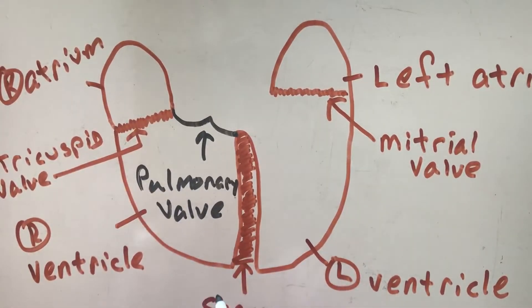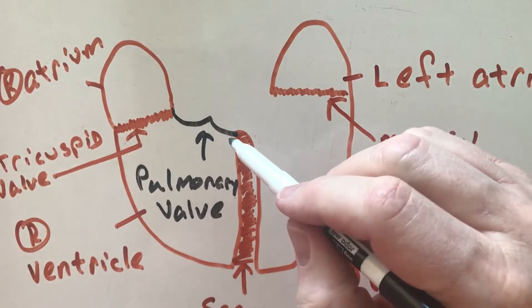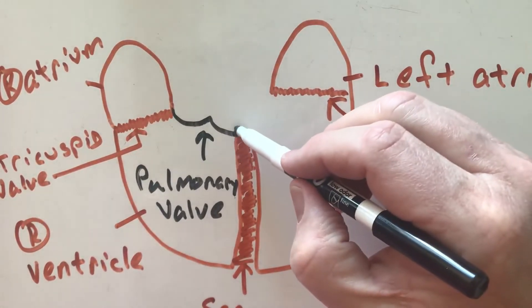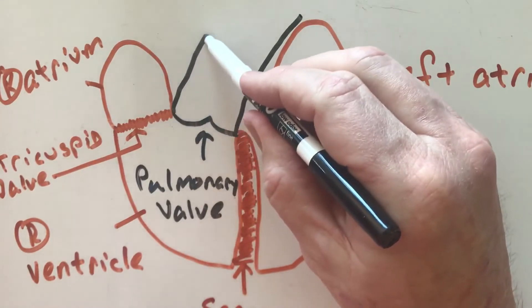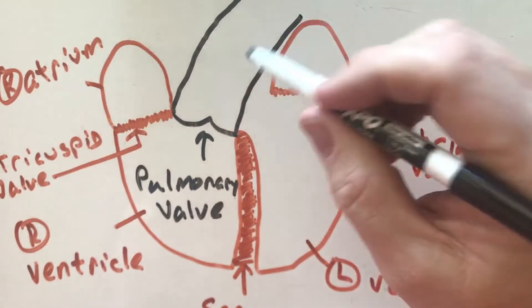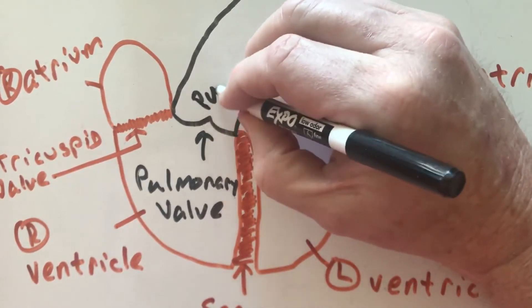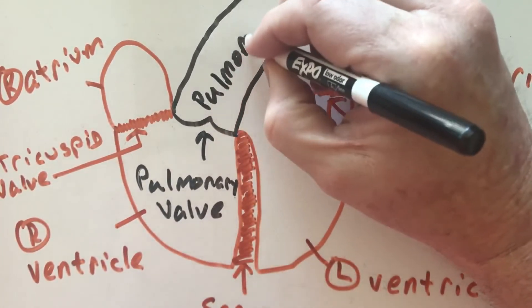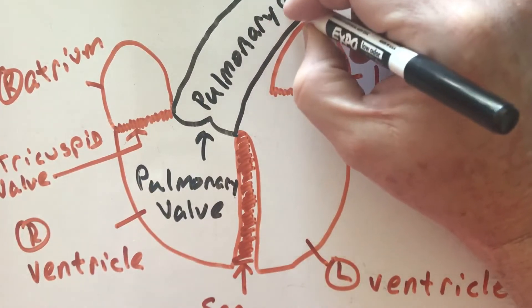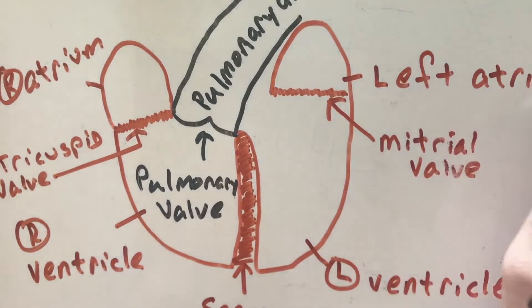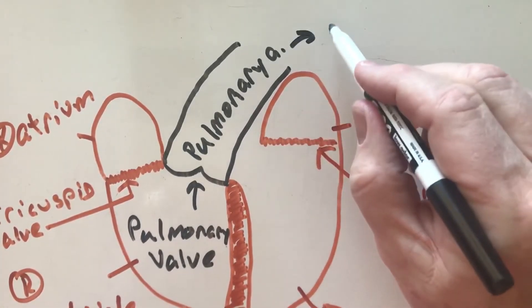That's going to be my pulmonary valve, and then it's going to go into my pulmonary artery. The pulmonary artery is going to go out to the lungs.